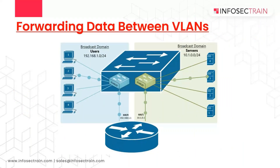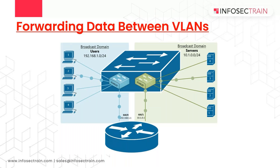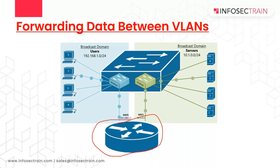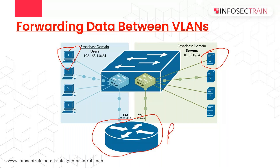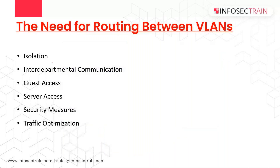If you create a campus LAN with many VLANs, you typically still need all devices to be able to send data to all other devices. Think about it — if the router is removed, would the devices be able to communicate with the servers? No. We need a router to communicate between different VLANs.